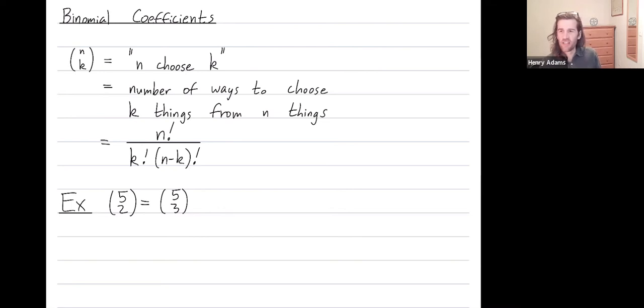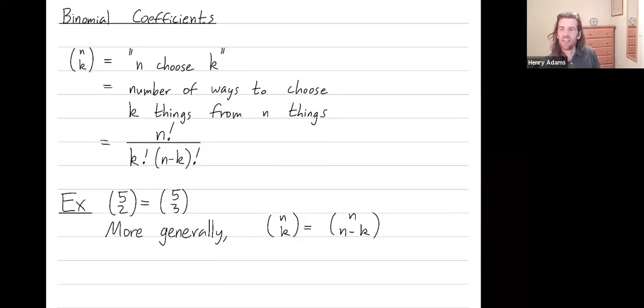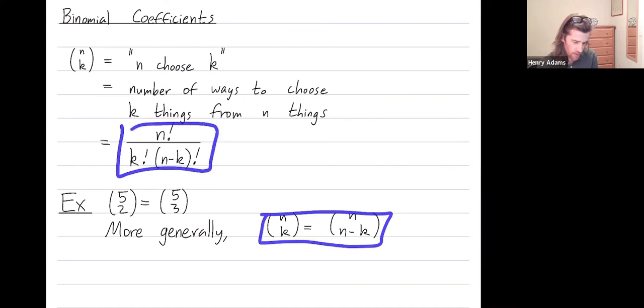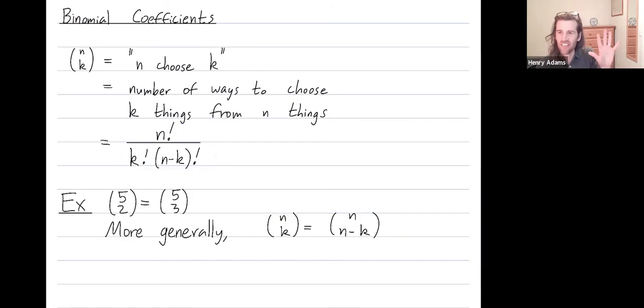But you should really think about this combinatorially. If I want to choose 2 fingers out of 5, maybe these 2 fingers to hold up, that's the same as actually choosing a complementary collection of 3 fingers out of 5 to fold down. So choosing 2 fingers to hold up is the same as choosing 3 fingers out of 5 to fold down. And this is a more general property. More generally, n choose k is equal to n choose n minus k. You could plug the two sides into this formula and prove that they're equal algebraically. Or you could think of this combinatorial explanation.